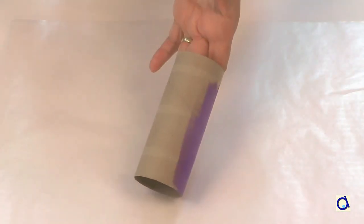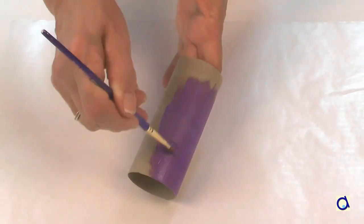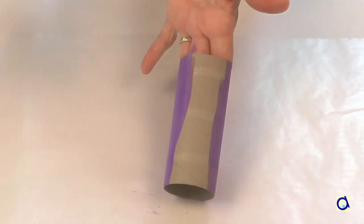Take a toilet paper tube and paint it in a colour of your choice. For a more beautiful finish, put a second coat of paint.